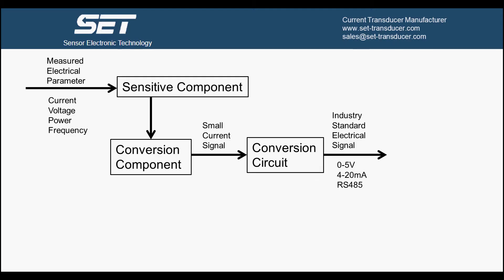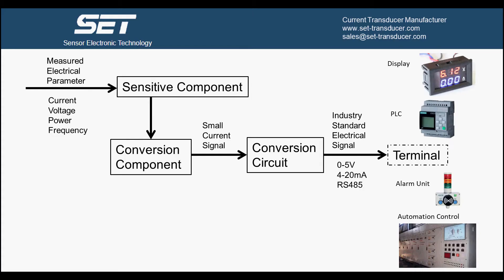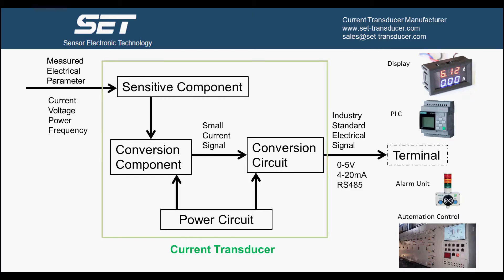The output is usually at 0 to 5 volts, 4 to 20 milliampere, or RS485. At the end, the output signal goes to terminal equipment such as display, PLC, alarm unit, automation control, etc. Current transducer usually has a power circuit, which provides power to the conversion component and conversion circuit.